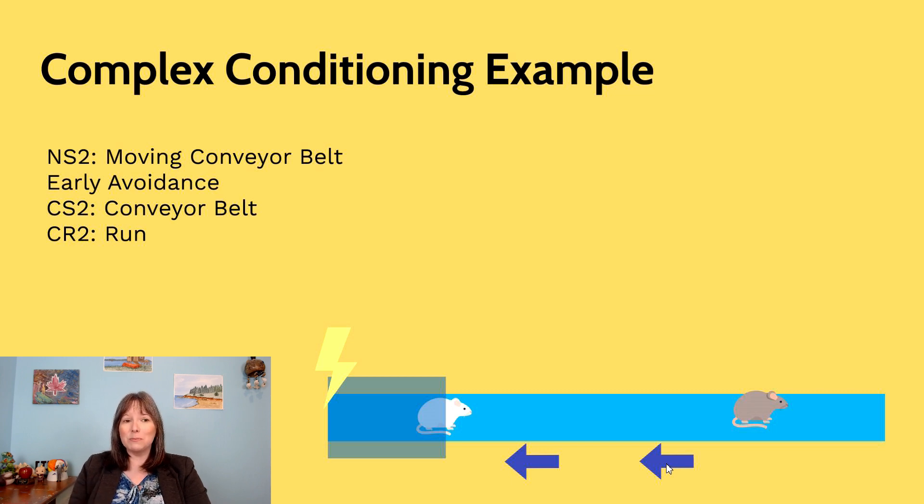That is, the conveyor belt is now turned into conditioned stimulus two, and that conditioned stimulus two will elicit conditioned response two, which is for the rats to run. So now when the conveyor belt turns on, they're going to scurry to the other end. It's not going so fast they're not going to get too overwhelmed or overtired, but they have to constantly move to stay out of the dark compartment to avoid that shock.